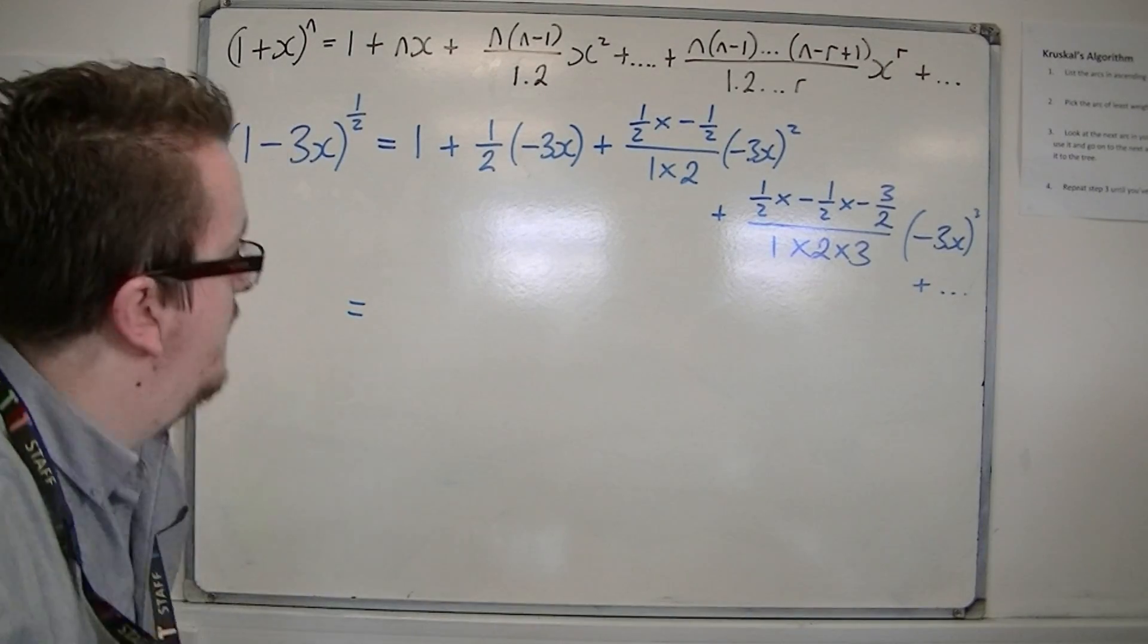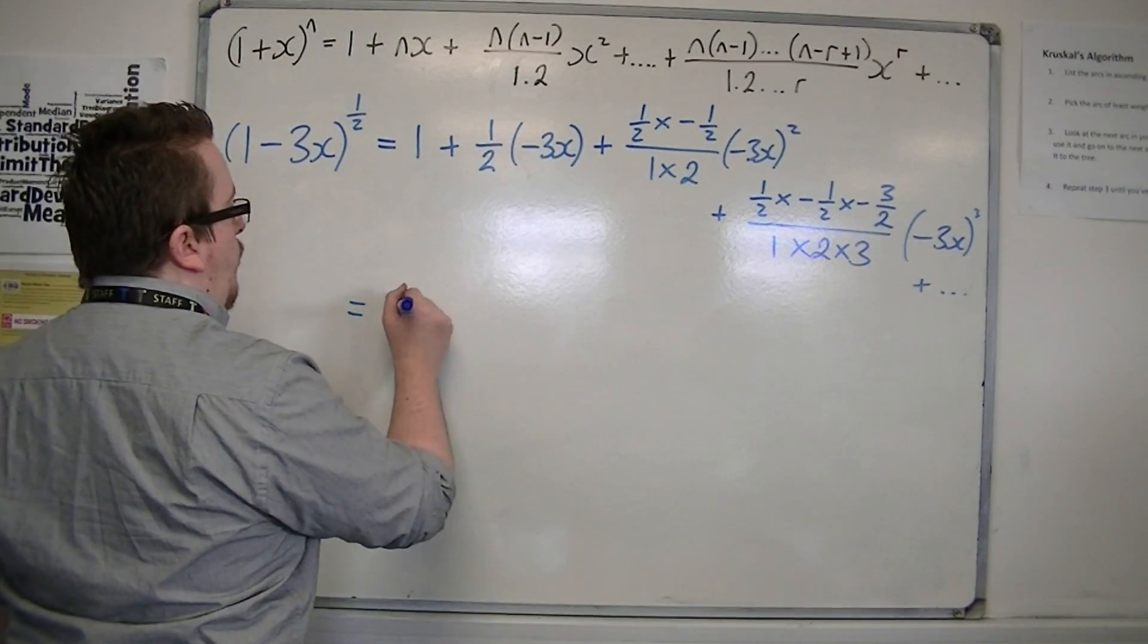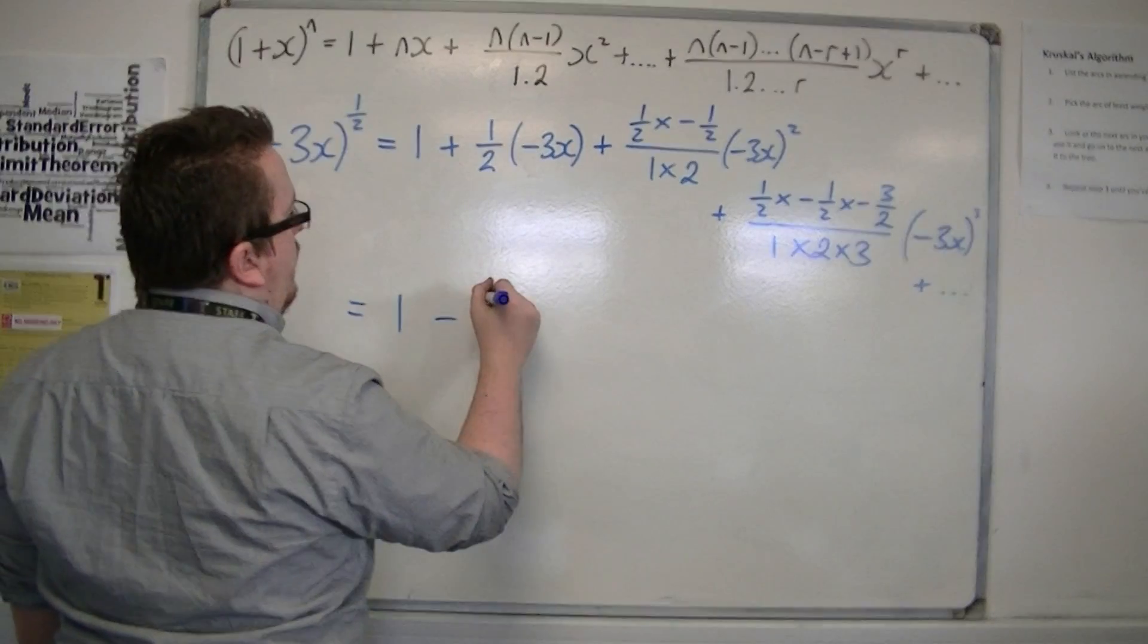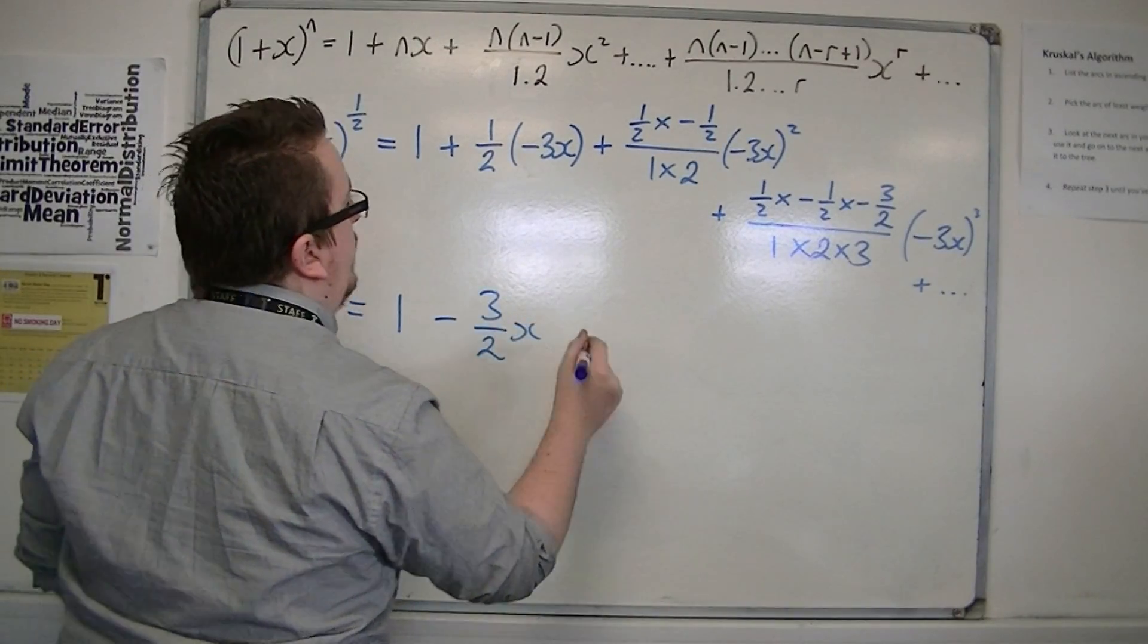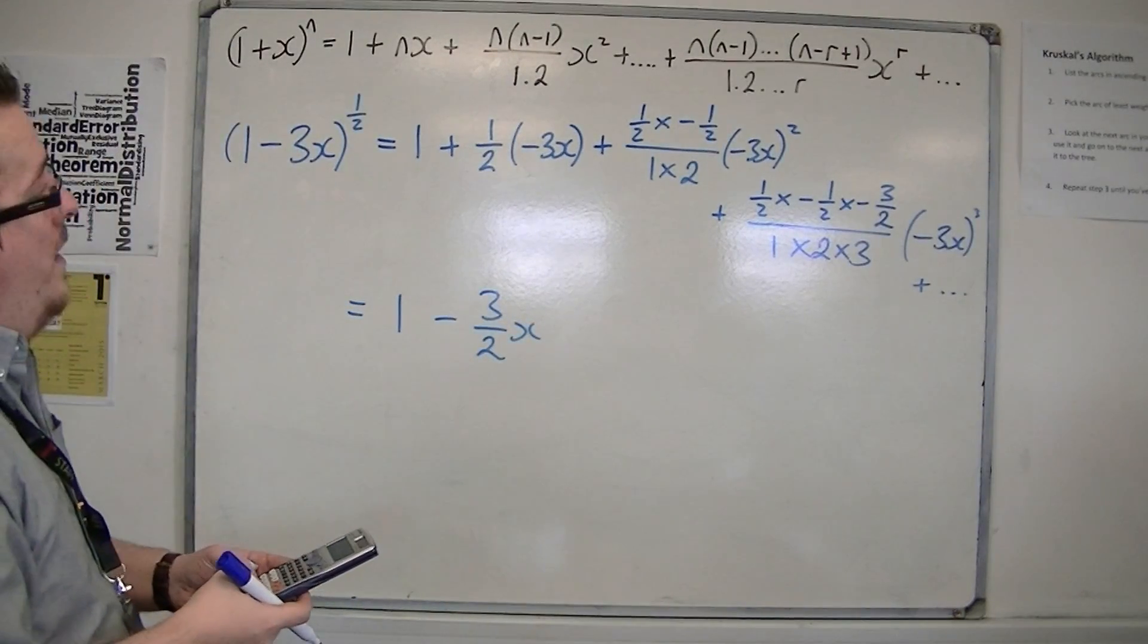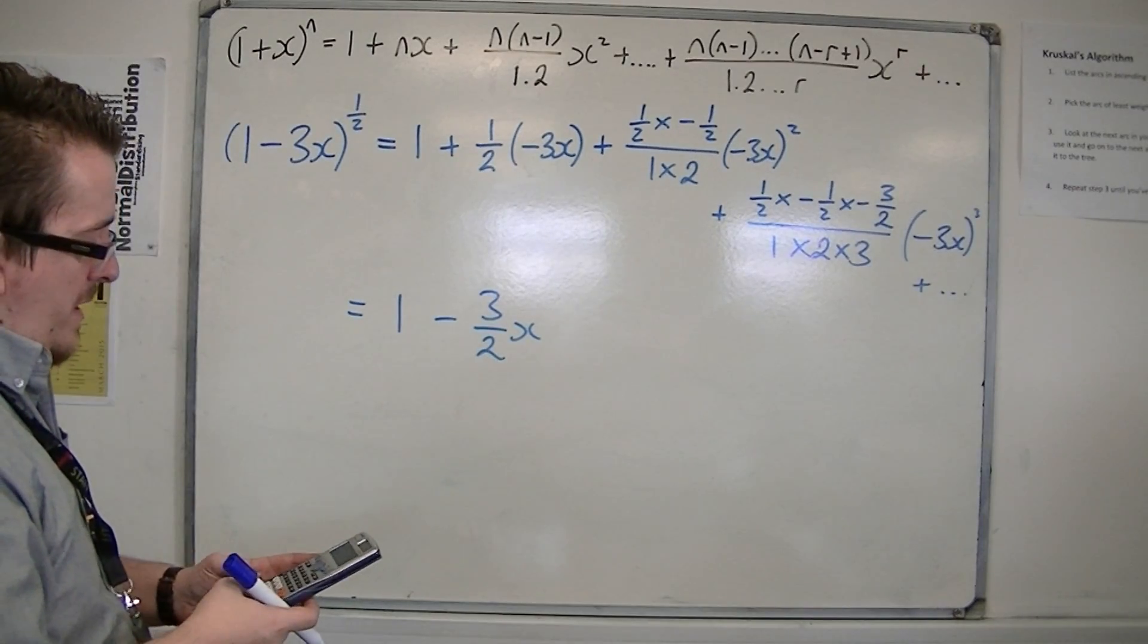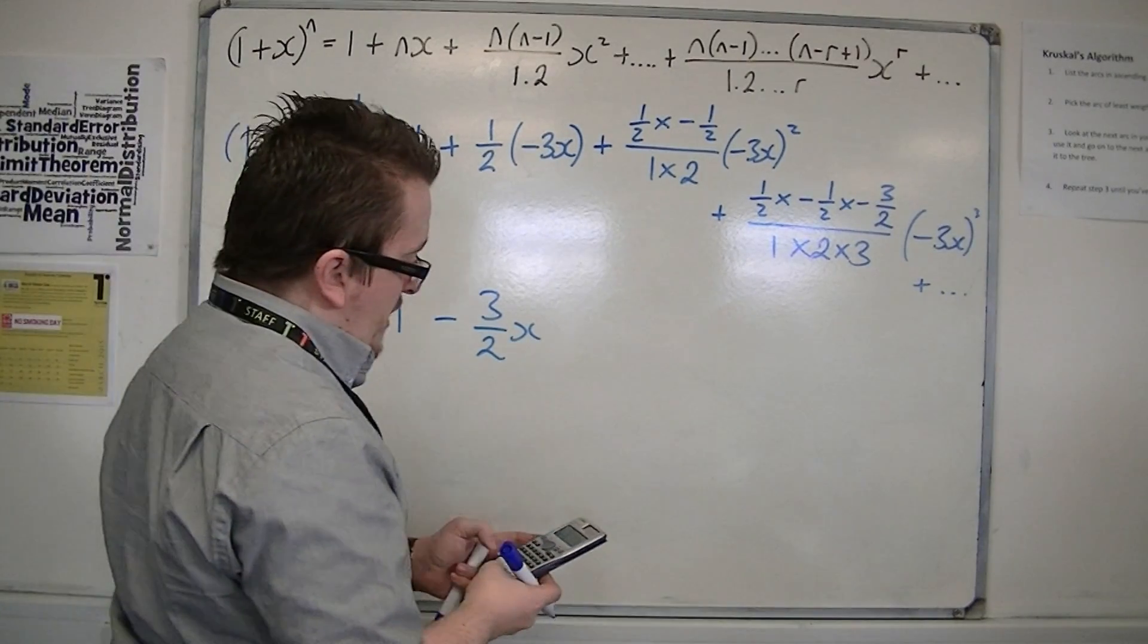This is where the calculator comes in handy. So I've got 1 - 3/2 x. Then I've got 1/2 times 1/2, divided by 2, times (-3) squared.